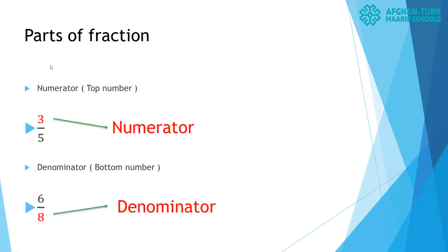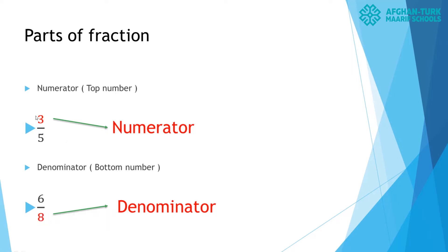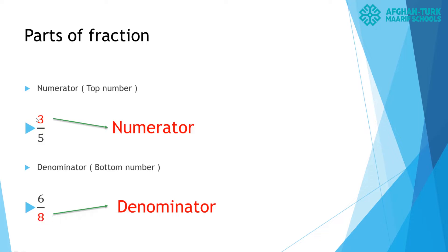Parts of Fractions. A fraction has two parts. The first part is the numerator — it means the top number, the number we write at the top of the fraction line. The second part is the denominator, which is the bottom number that always shows the equal parts of a number or an object.